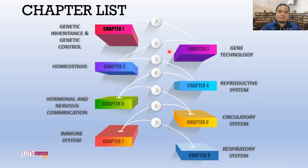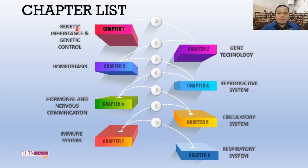The first chapter is Genetic Inheritance and Genetic Control. The second chapter is Gene Technology, which covers applications of genetics. The third chapter is Homeostasis, the fourth is the Reproductive System, the fifth is Hormonal and Nervous Communication, the sixth is the Circulatory System, the seventh is the Immune System, and the eighth and final chapter is the Respiratory System.